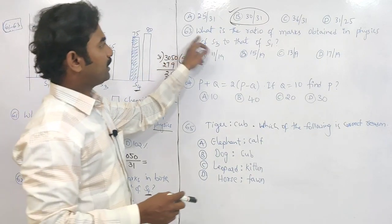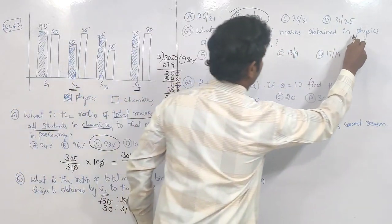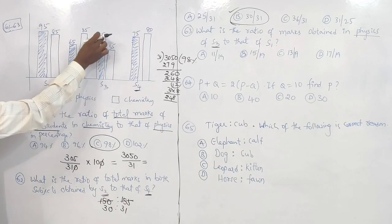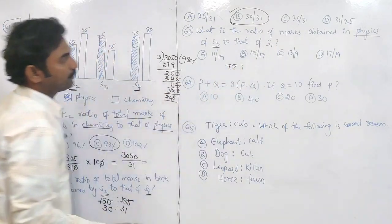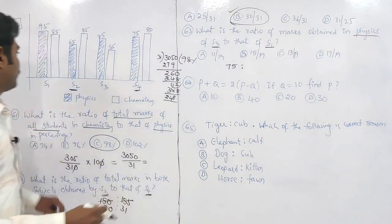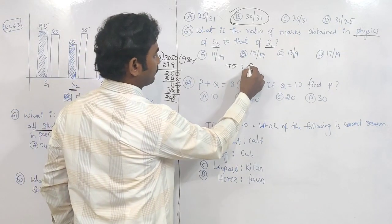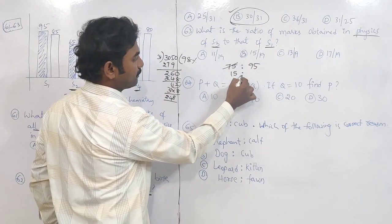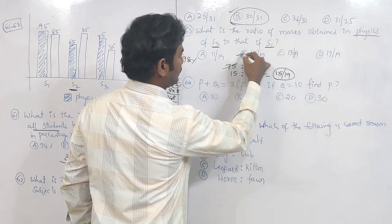Question 63: what is the ratio of marks obtained in physics of S3 to that of S1 in physics? S3 physics marks are 75; S1 physics marks are 95. Cancelling with 5: 15 is to 19. So the answer is 15/19. Option B is the right answer.